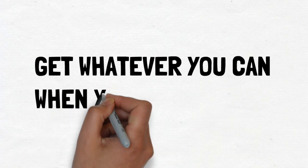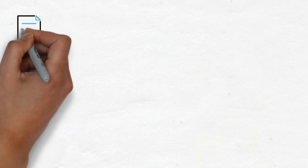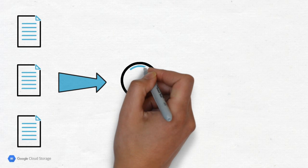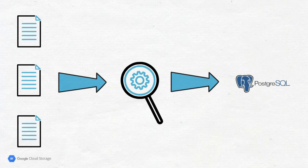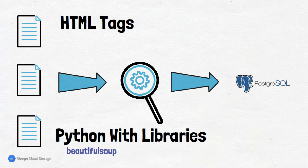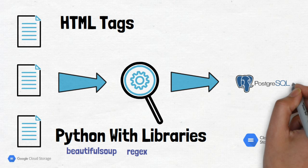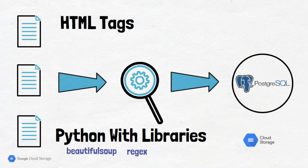Project one was web scraping. This is not a core data engineering project, but as it was my first freelance project, I took it to display something on my profile. The client had millions of HTML files on Google Cloud Storage and wanted to extract data from them and store it in a PostgreSQL database. Skills required: basic HTML tags, Python with libraries like Beautiful Soup and Regular Expressions, Google Cloud Storage library, PostgreSQL, and basic Google Cloud services such as Cloud Storage, Cloud SQL, and APIs.